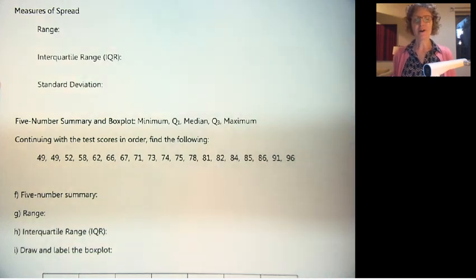Hi, this is another video on describing data. We've talked about that there are four things that we need to describe: the shape, the center and spread, and unusual features or outliers. We're going to continue in this video with measures of spread.